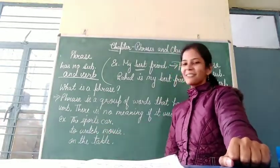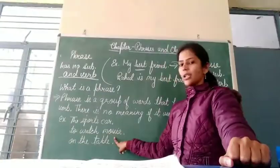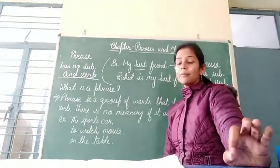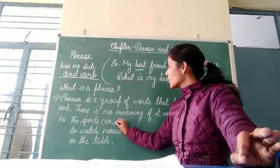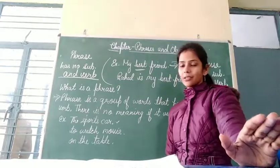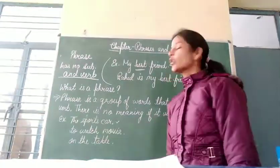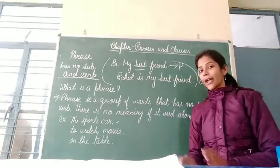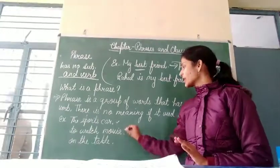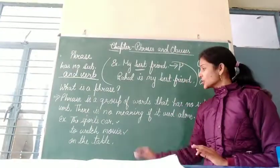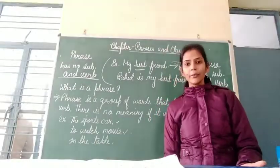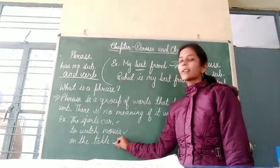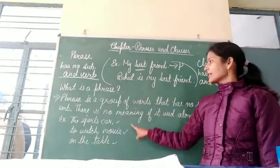Here are some examples: 'the sports car' — there is no subject, no verb, and no complete meaning. 'To watch movie' — there is no subject, no verb, only an object. 'On the table' — we don't know what is on the table; it does not give complete meaning. So all three are phrases.